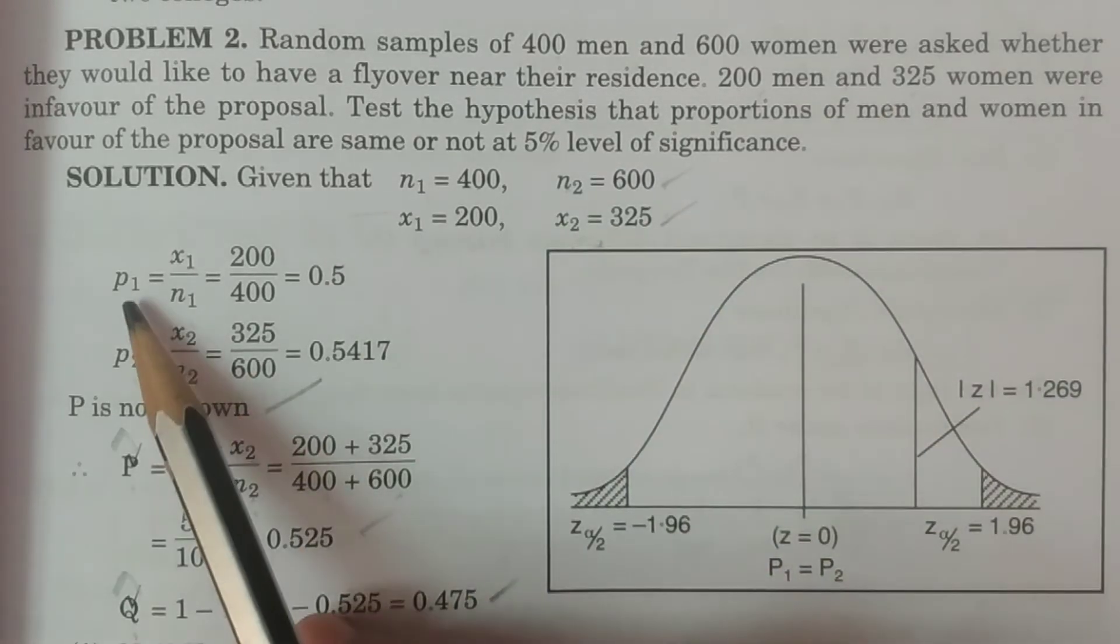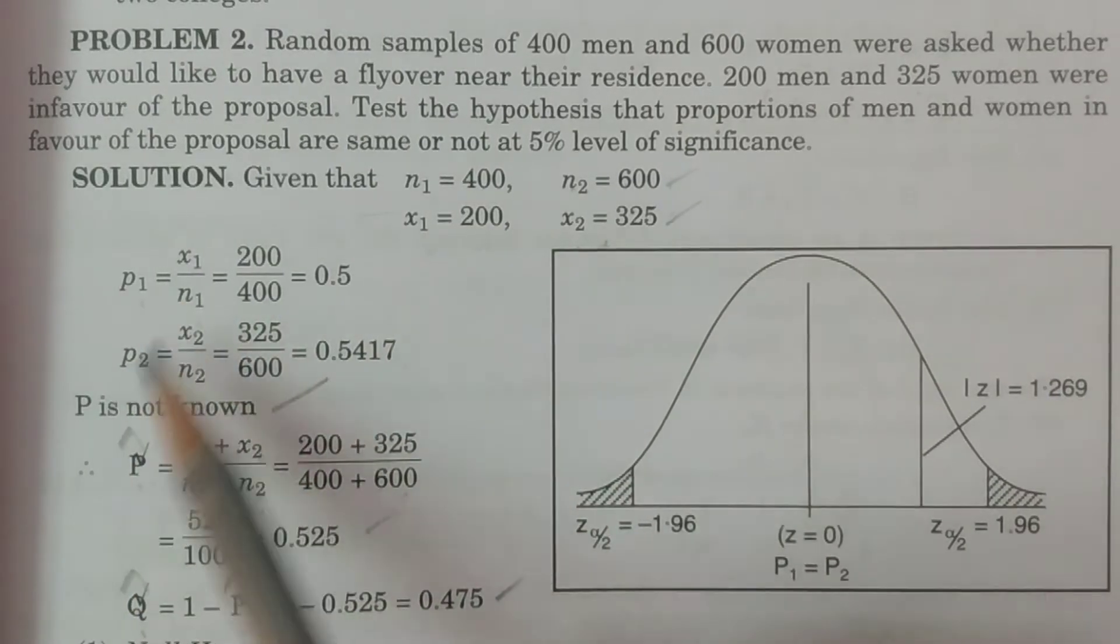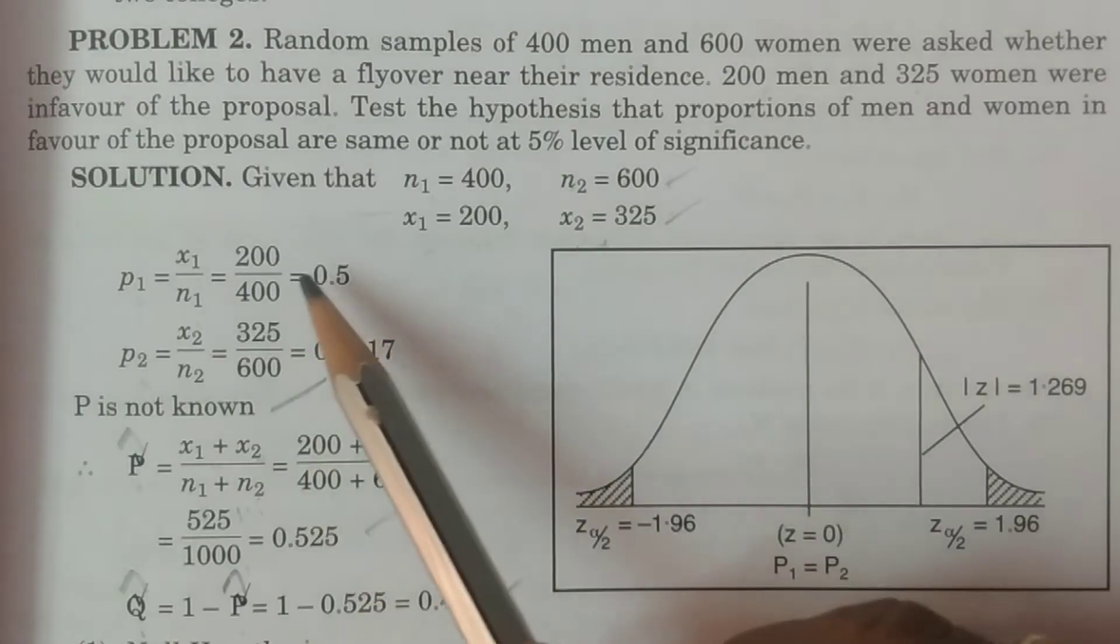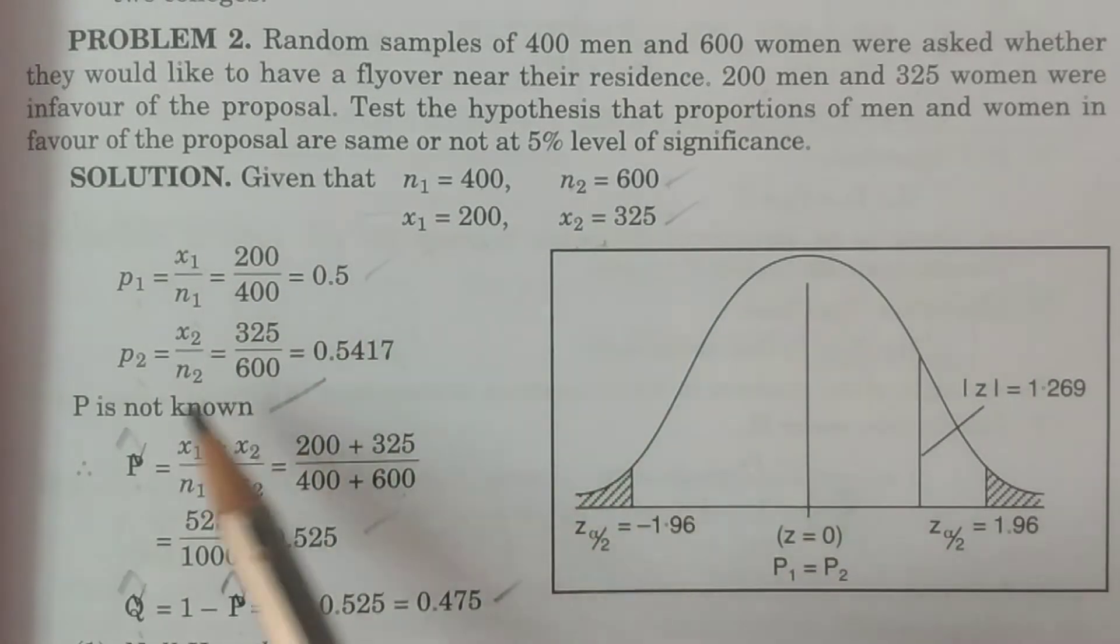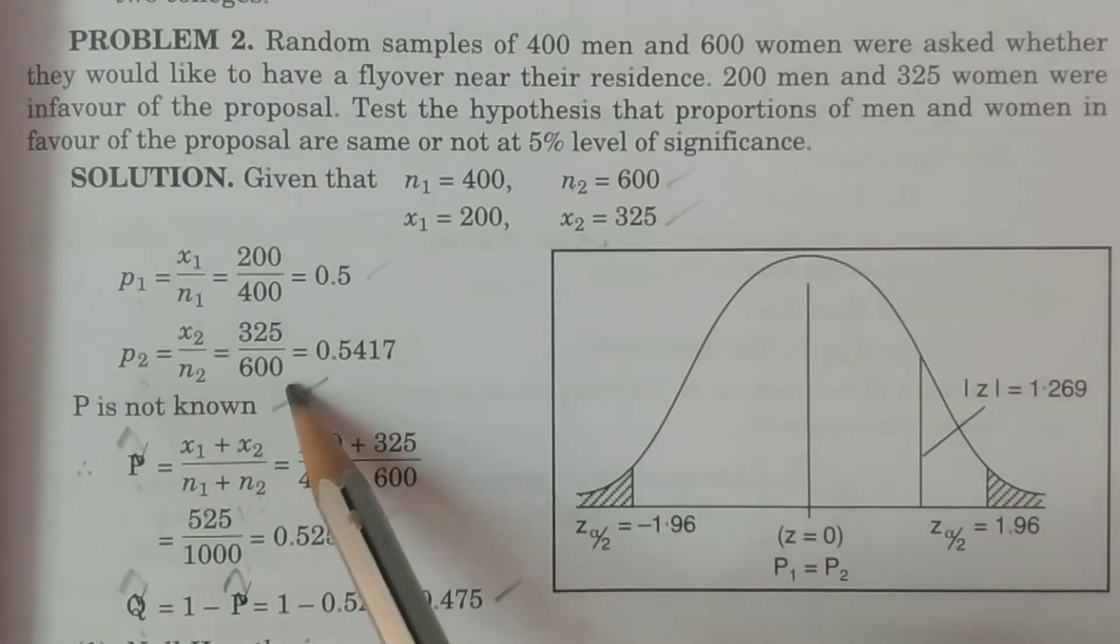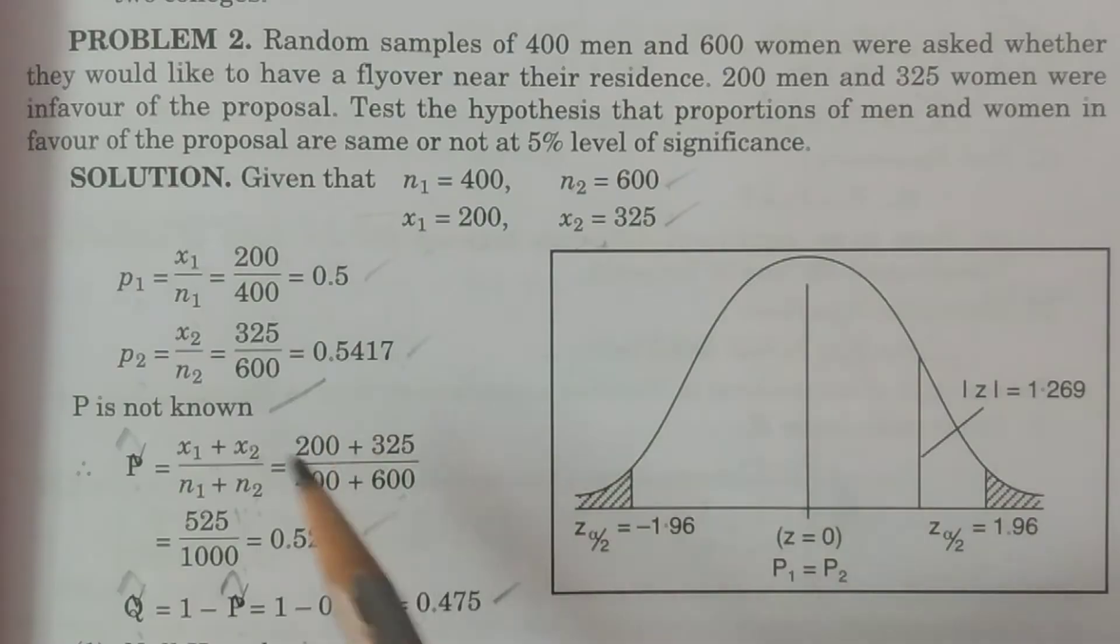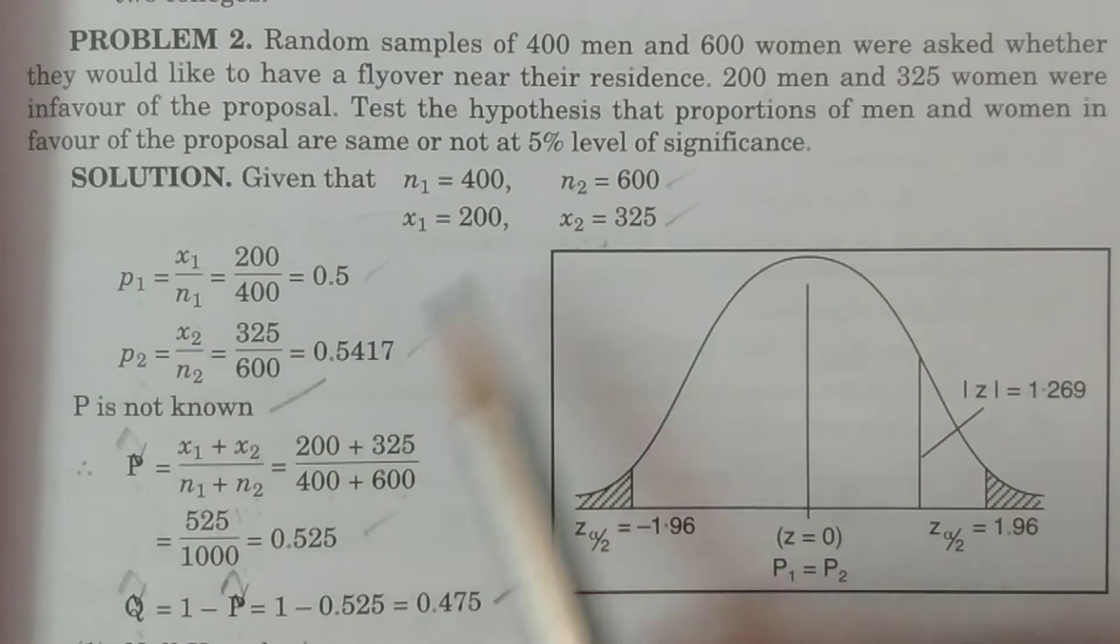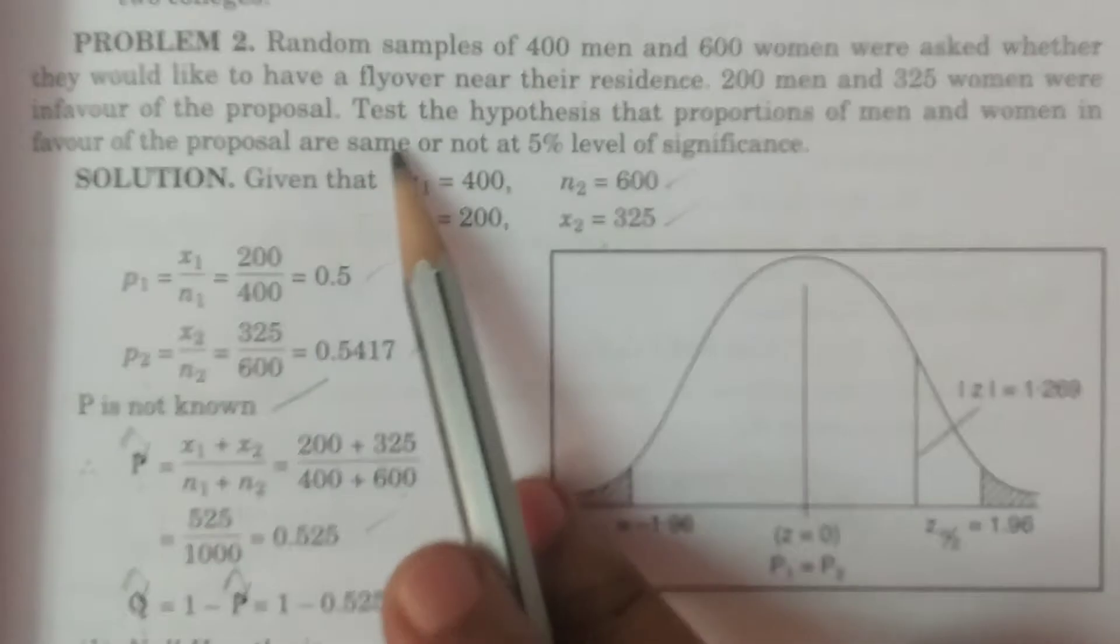Now we will calculate the sample proportions p1 and p2. p1 equals x1 by n1, which is 200 by 400 equals 0.5. p2 equals x2 by n2, which is 325 by 600 equals 0.5417. We will calculate these values first, then do the remaining questions.